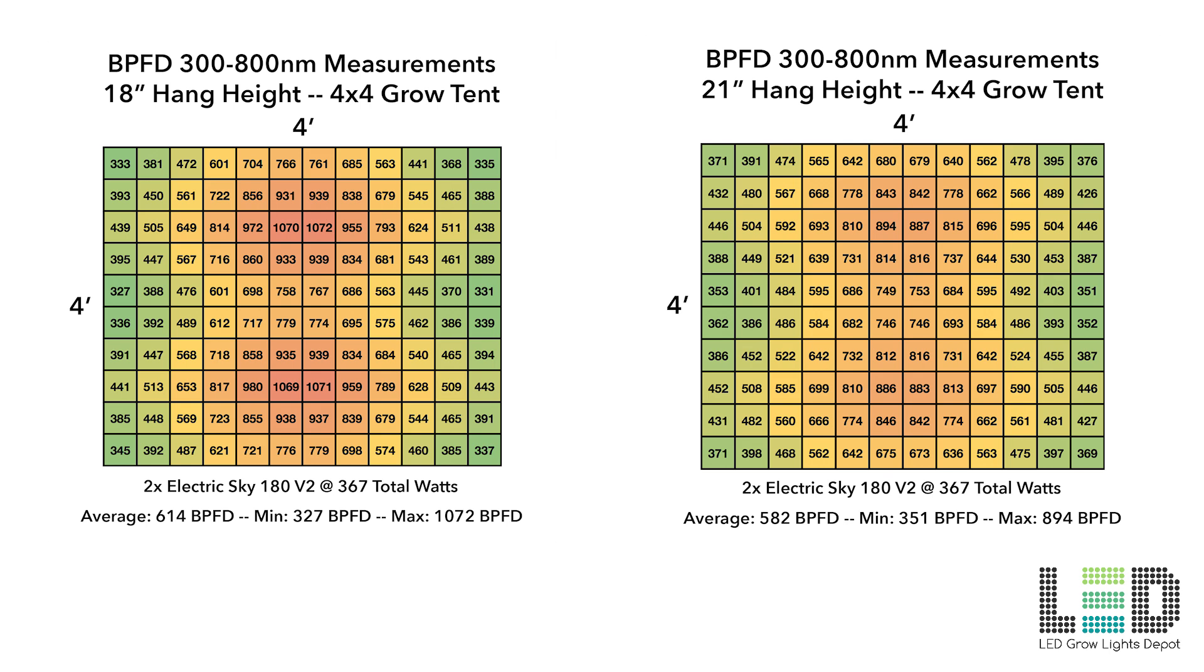Therefore, the readings will be a little bit higher than what is measured with a typical PAR meter. While the lights can be used in a 4x4, we'd recommend using two of these lights in a 3x3 area for the best intensity and coverage.